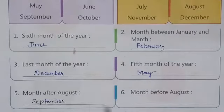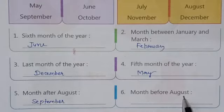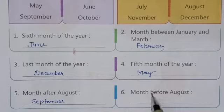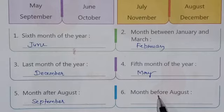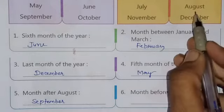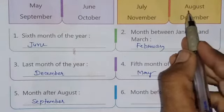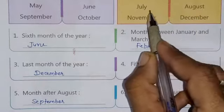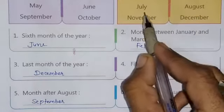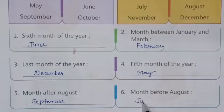Question number six: the month before August. Before means before. Which month comes before August? This is August, and before August you can see the month is July. So write down the answer: July.